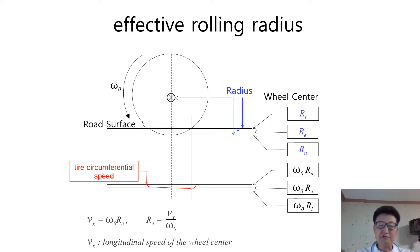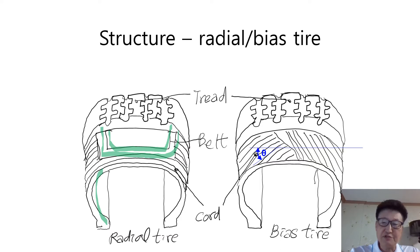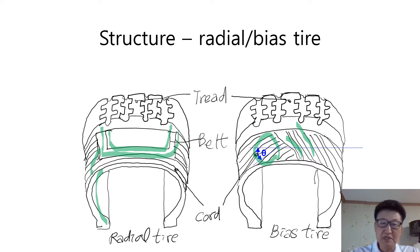Let's get the hang of the structural differences between radial and bias tire first. I hope you understand my hand-drawn picture. The picture on the left describes the structure of radial tire. Several belts are wrapping the tire circumferentially and cords are radially reinforced in the tire section. On the other hand, a bias tire has no circumferential belts, and all the cords are biased from the radial direction with some angle theta.